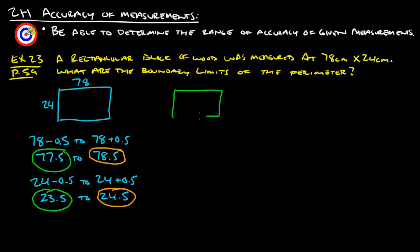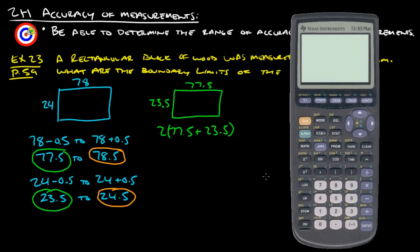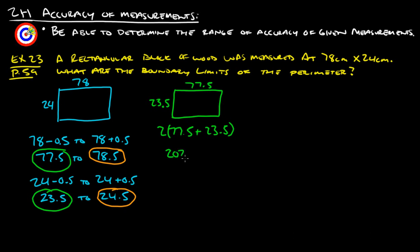Let's redraw that with the smallest one: 77.5 by 23.5. To find the smallest perimeter, we add 77.5 to 23.5 and then double it. So the perimeter is 2 times (77.5 + 23.5), which equals 202 centimeters. That's the smallest possibility.